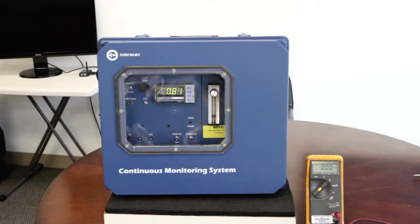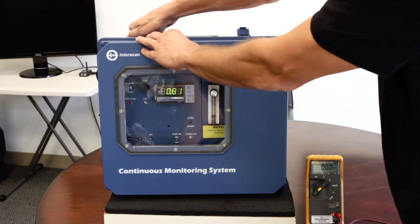This is an instructional video on how to do ECS, electronic calibration service, on your Interscan LD series monitoring system. To begin, open the two latches at the top of the enclosure.